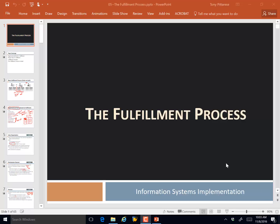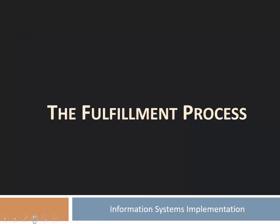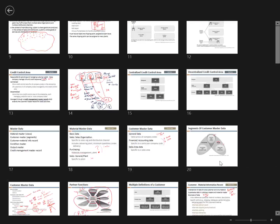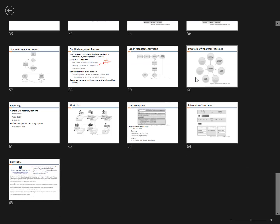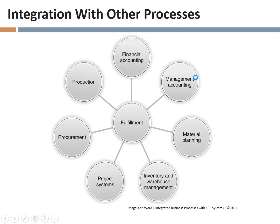We have just a couple of other things here to talk about as we wrap up our discussion of the fulfillment process. Let me find where we left off last time — I think it's slide number 60. We just wrapped up talking about the credit management process, and we are now looking at a slide that illustrates at a very high level how fulfillment interacts with a lot of other processes in the context of our ERP system.